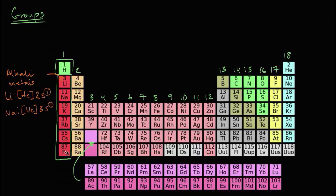Well, let's keep looking at the other groups. If we move one over to the right, this group two right over here, these are called the alkaline earth metals.